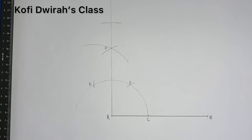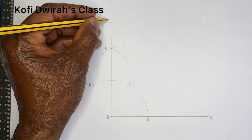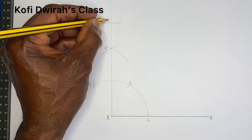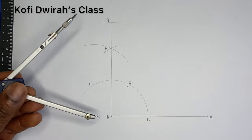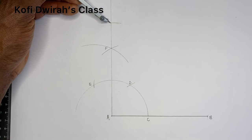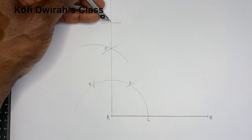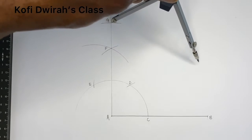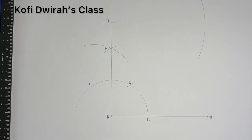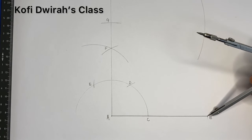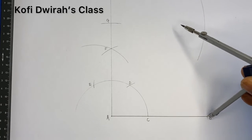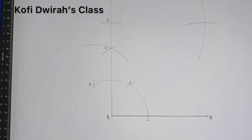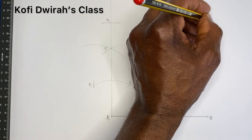Then, with the same radius — which is length AB — we consider this point on the perpendicular line to be point G. With the same radius at point G, you draw an arc. Then with the same radius you draw another arc. So we have point B and point H.